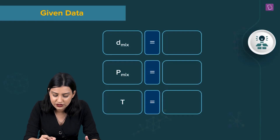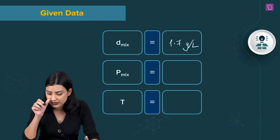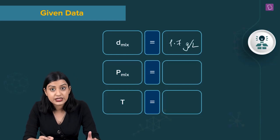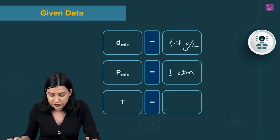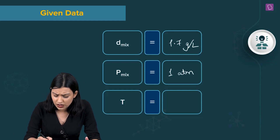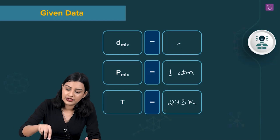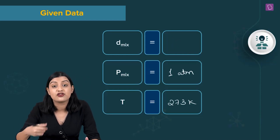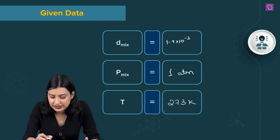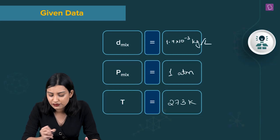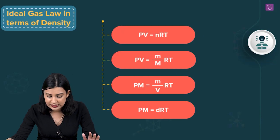We have density of the mixture as 1.7 grams per liter. Pressure at STP is 1 atm, temperature is 273 Kelvin. To standardize units, write it as 1.7 × 10⁻³ kg per liter — if you write it like this, you can avoid unit confusion. That is what we have.